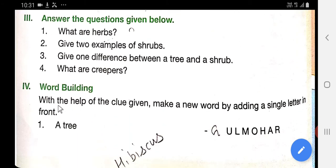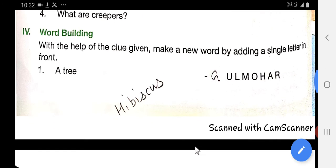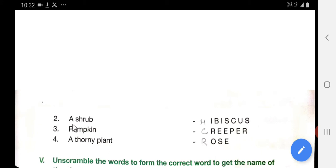Word building. So with the help of the clue given, make a new word by adding a single letter in front. The first one is a tree. A tree is gulmohar. If we add a G, it will become gulmohar. The second one is a shrub. Shrub is hibiscus.